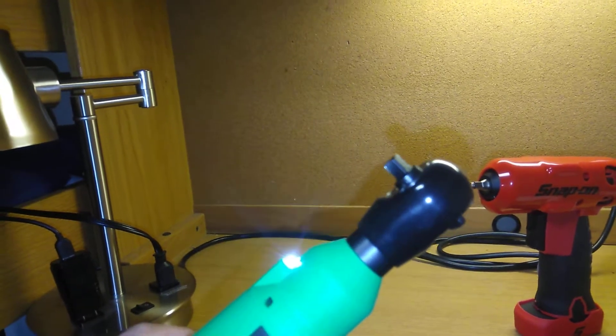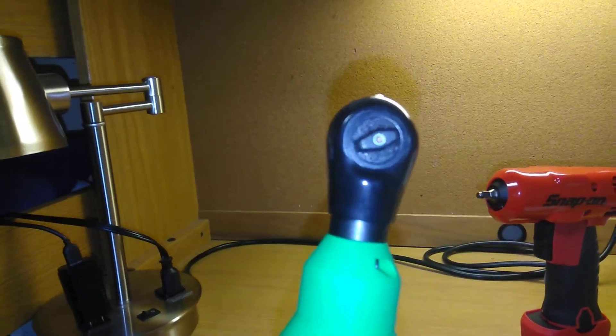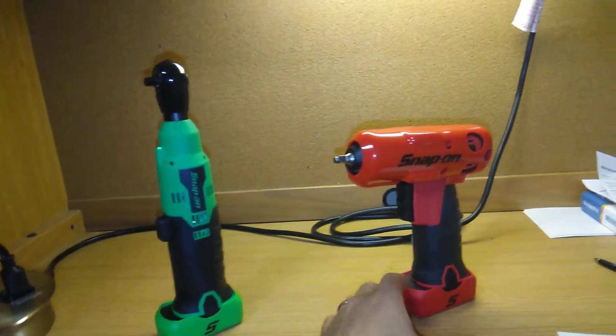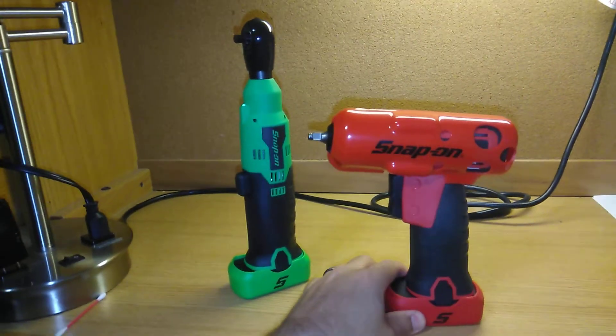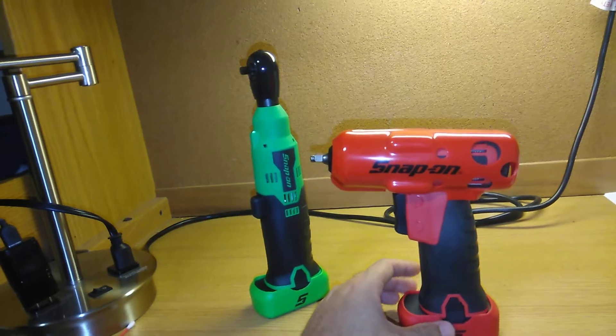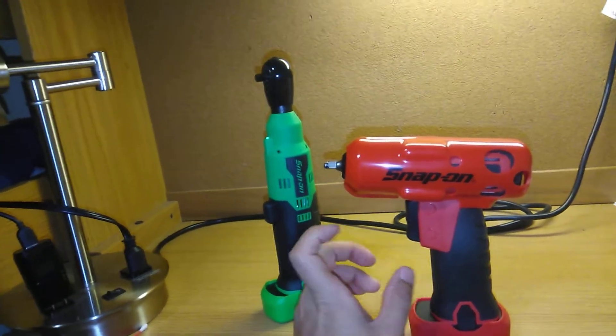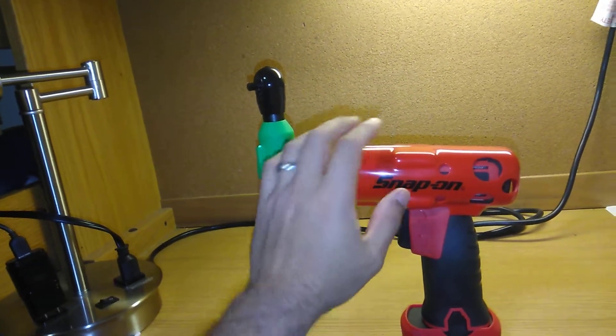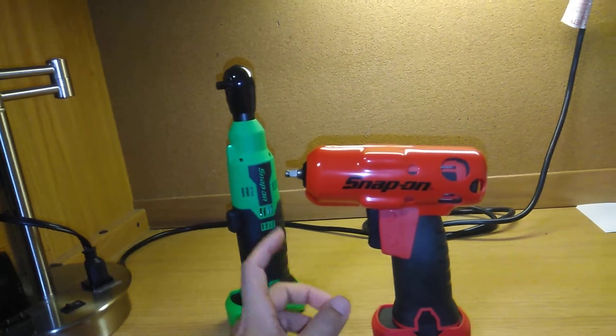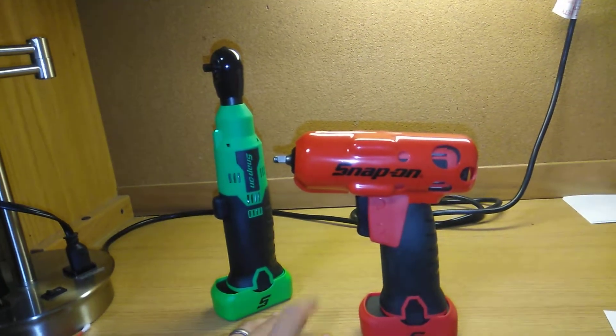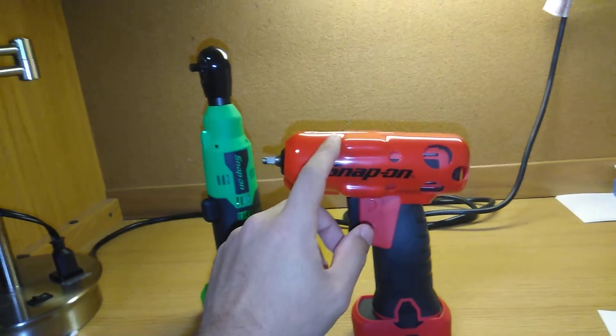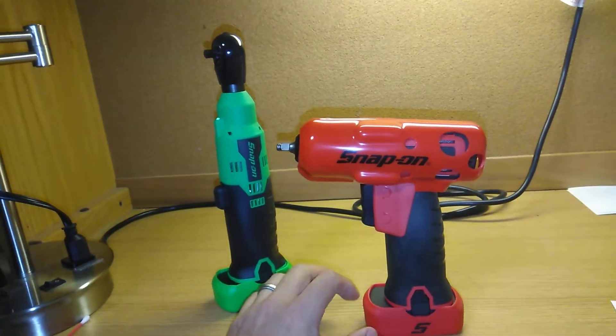This is the quarter inch impact wrench and this one's a little bit tougher because I couldn't find a quarter inch boot cover for this. I don't even know if they even make one, but I've seen a bunch of photos of the three eighths model of this 14.4 volt that had covers in various colors.